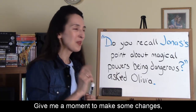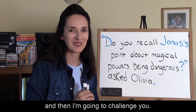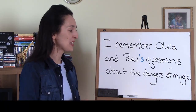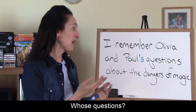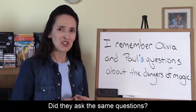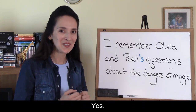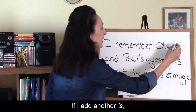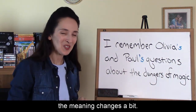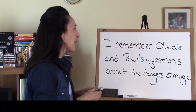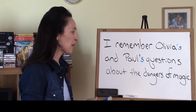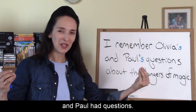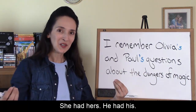Now I'm going to challenge you. Consider: 'I remember Olivia and Paul's questions about the dangers of magic.' Whose questions? Olivia and Paul's. Did they share the same questions? Yes — two names but a single apostrophe S. If I add another apostrophe S, the meaning changes: 'I remember Olivia's and Paul's questions about the dangers of magic.' This now says Olivia had her questions and Paul had his — they were different.